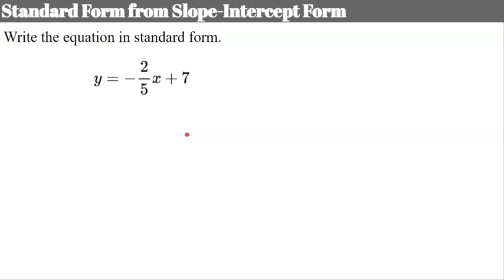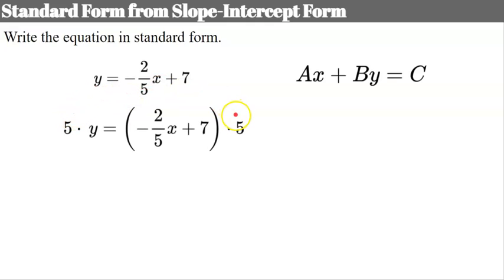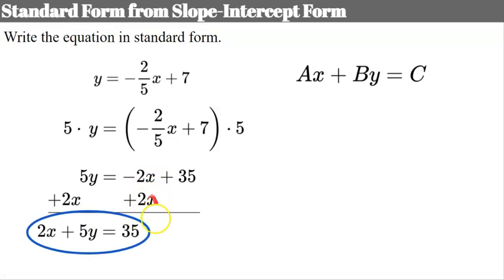In previous video lessons we talked about slope-intercept form. We're going to take a linear equation written in slope-intercept form and transform it into standard form. First, I'll clear the fraction because I need integer values and cannot have fractions. I'll multiply both sides of the equation by 5 to clear the denominator. 5 times y is 5y; 5 times negative two-fifths x is negative 2x; and 5 times 7 is 35. Now I'll add 2x to each side, leaving 2x plus 5y equals 35 — a linear equation in standard form.